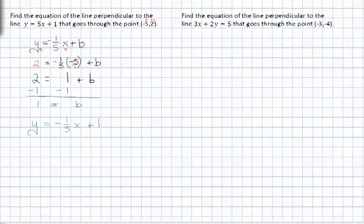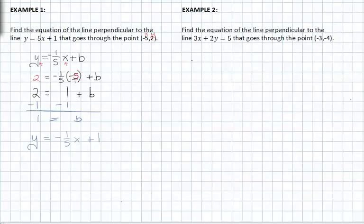Next, in example two, we need to find the equation of the line perpendicular to the line 3x plus 2y equals 5. Once again, this is not in slope intercept form, it's in standard form. So we're going to subtract 3x from both sides, and we get 2y equals negative 3x plus 5.